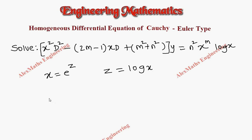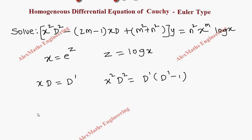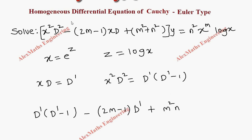By the substitution we get x times d as D dash and x squared d squared as D dash into D dash minus 1. By substitution, the first term is D dash into D dash minus 1, then minus 2m minus 1 into D dash, and the last term is plus m squared plus n squared, then the whole bracket into y equals the other side, which is n squared and x power m. Since x is e power z, this becomes e power mz and log x which is z.